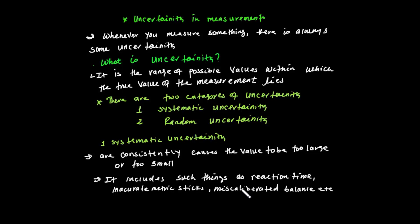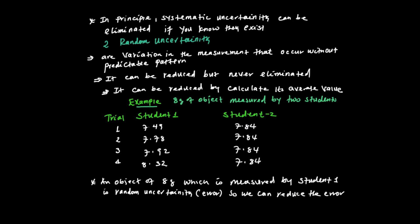For example, if a balance is miscalibrated and always reads 1.5 kg for a given object, that is systematic uncertainty. In principle, systematic uncertainty can be eliminated once you know it exists.